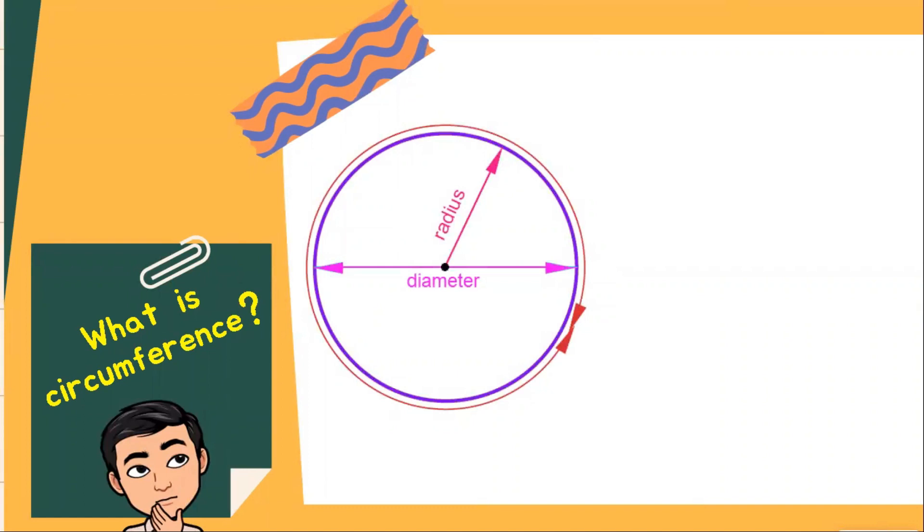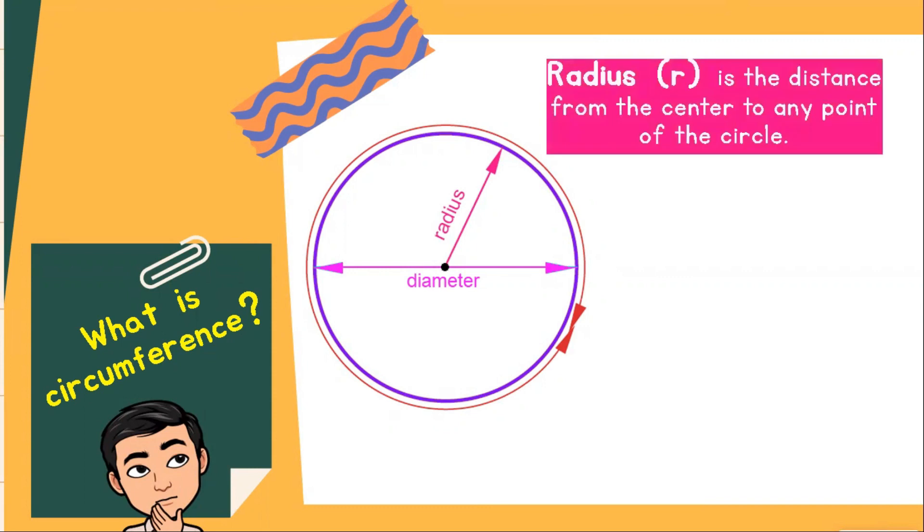We have here a circle, and before we dwell to the concept of circumference, let's review first the parts of a circle.